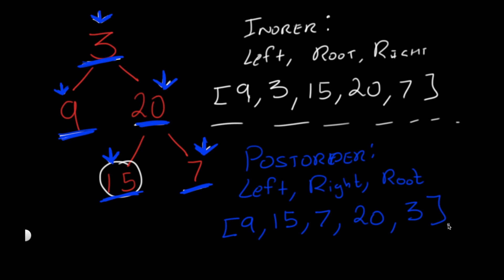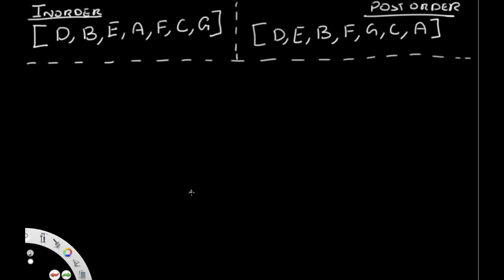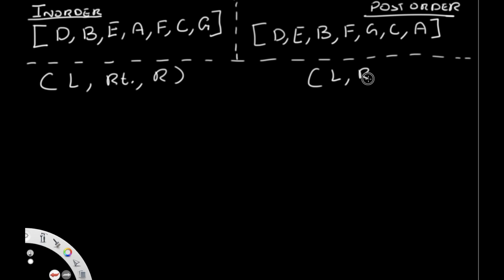Now let's see how, given both traversals, we can construct a binary tree. For in-order: left, then root, then right. For post-order: left, then right, then root. Since post-order ends with root, the last element in our post-order traversal is always the root of the binary tree. In this case, A is the root.